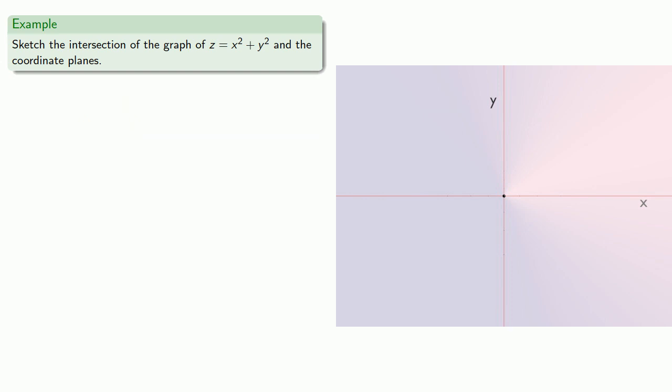If I want to sketch the points on the graph and the yz plane, we'll have x equal to zero, giving us z equals y squared. We should recognize this as the equation of a parabola opening upward. So again, we'll turn to face the yz plane and sketch our parabola.